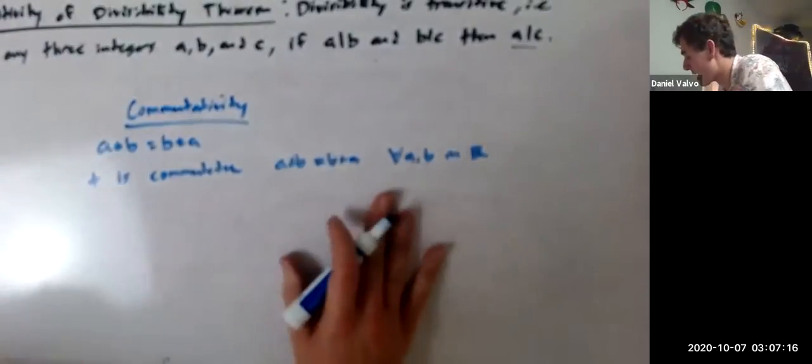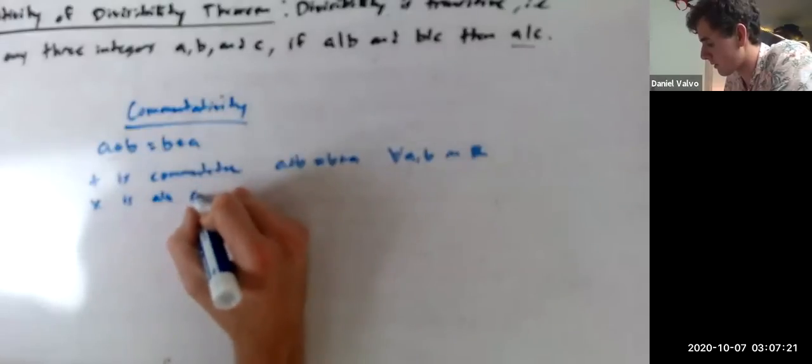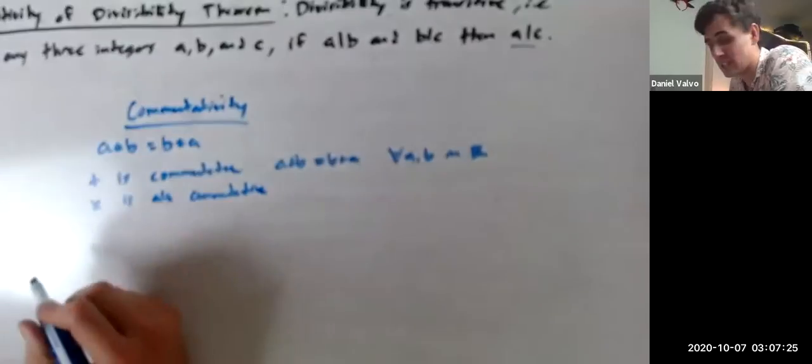This will come back probably. But anyway, yeah, so multiplication is also commutative. But for example, division isn't.